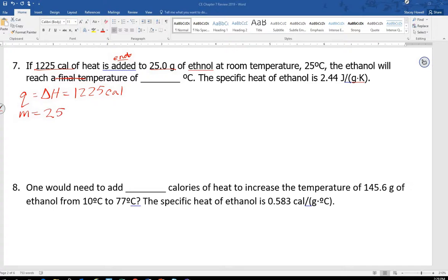If 1225 calories of heat is added, that is either Q or I can call it delta H. Either one works, it's 1225 calories. The next thing I come up with is heat is added, so it's going to be endothermic. Maybe I need that, maybe I don't. There's a mass, so mass equals 25.0 grams.